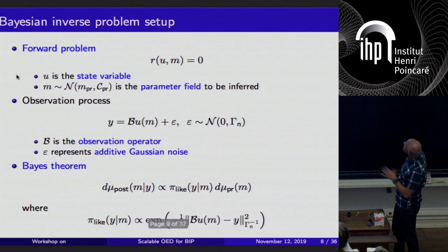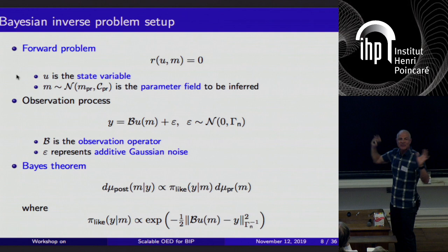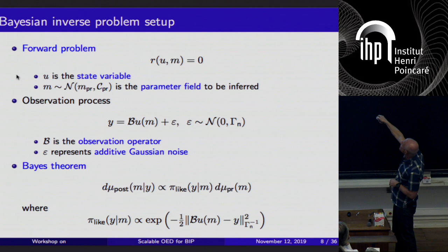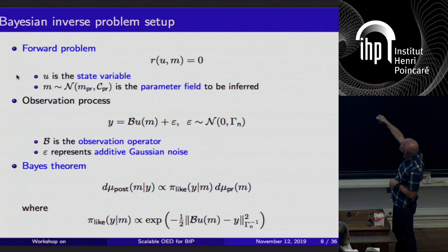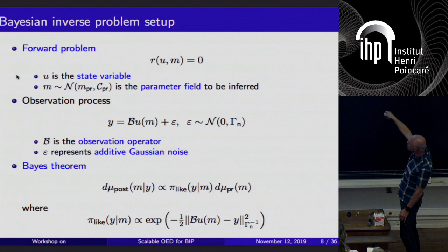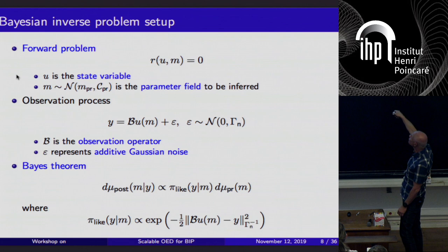Let's talk about the expected information gain as the objective function. For setup, the forward model depends on states U and model parameters M — an homage to Alberto Tarantola. M has a Gaussian prior with mean M-prior and covariance C-prior. The observation process uses additive Gaussian noise centered on zero with noise covariance Gamma_N, some observation operator B, and the actual observation is Y. Bayes' theorem in infinite-dimensional form gives the Radon-Nikodym derivative of the posterior with respect to the prior as the likelihood, which takes the usual form under Gaussian additive noise.